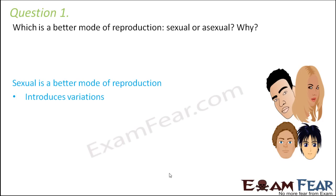In asexual reproduction the new organisms produced are exact copies of their parents, so there is no variation at all. Variations are always for the better — they help organisms survive under adverse conditions and also help in the evolution of new species. With small variations over a period of time you get a new species altogether. So variation results in the origin of species, and because of these reasons sexual reproduction is a better mode.